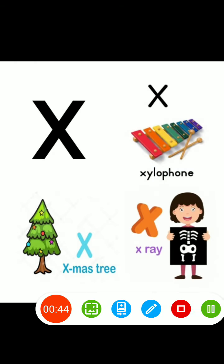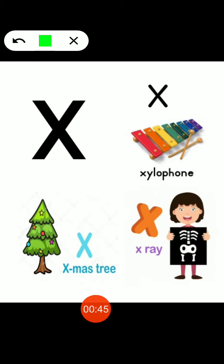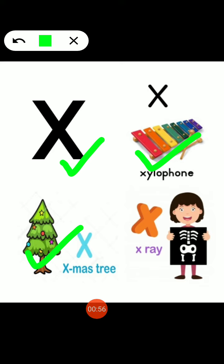Dear students, repeat after me. Which alphabet is this? X — X for Xylophone. X for X-Mystery. X for X-Ray.